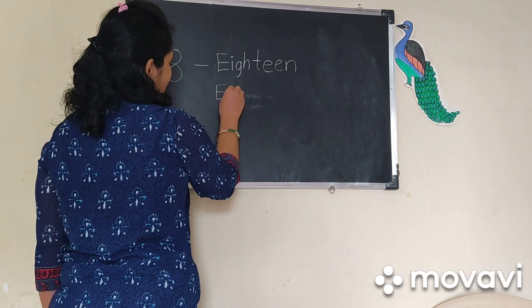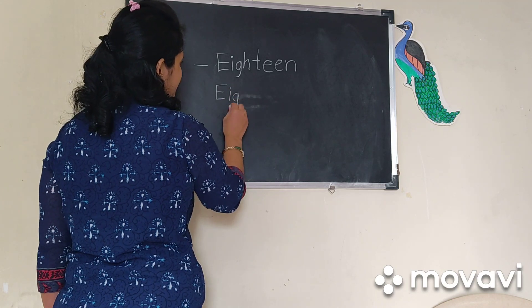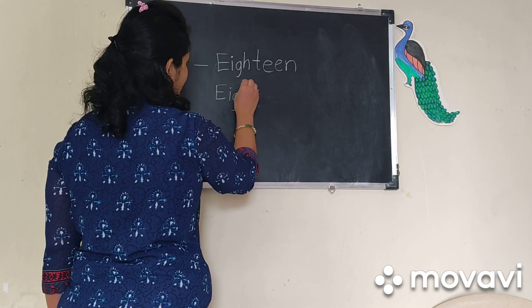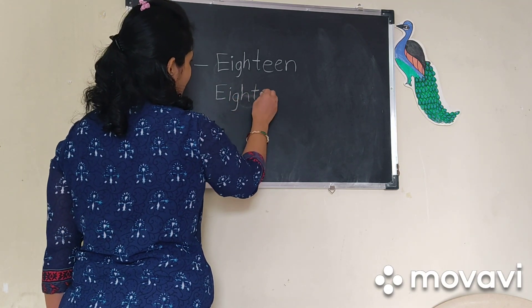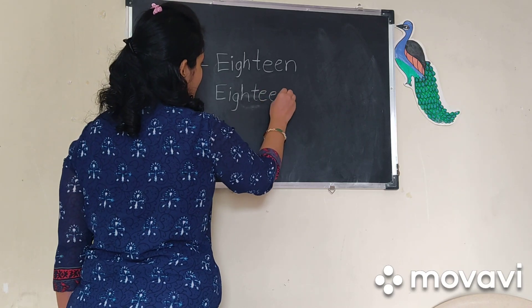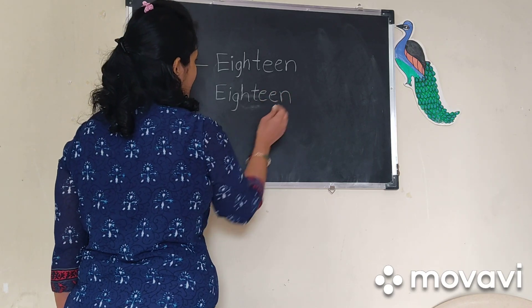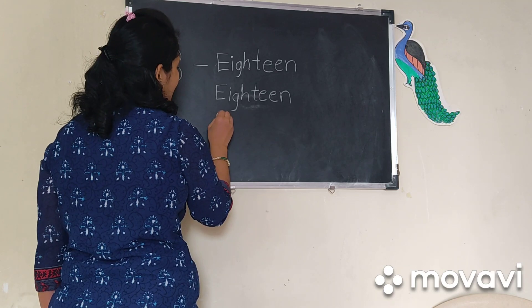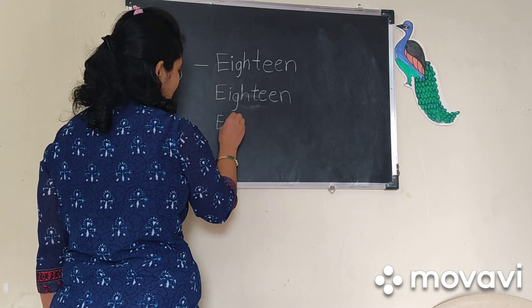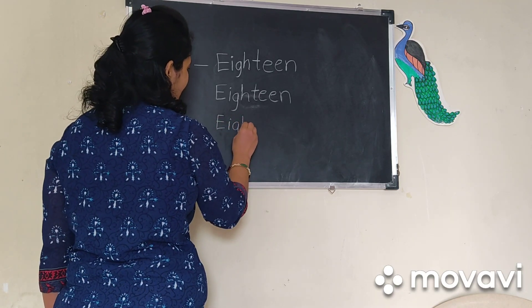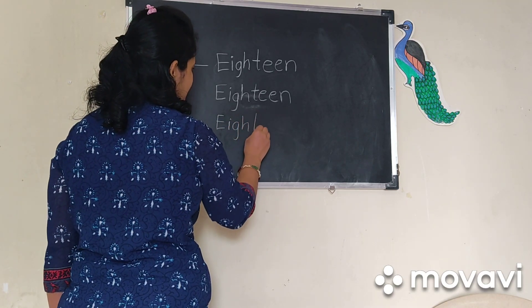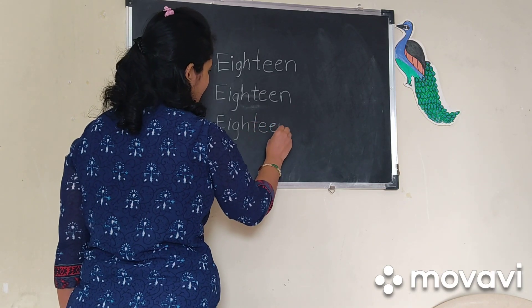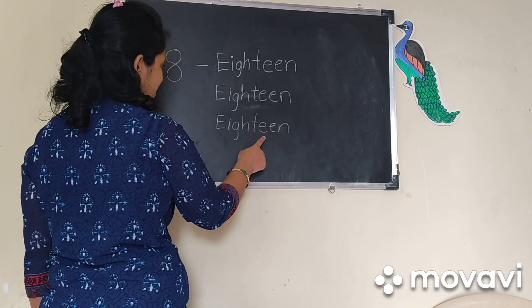E, I, G, H, D, E, E, N. 18. Say with me: E, I, G, H, D, E, E, N. 18.